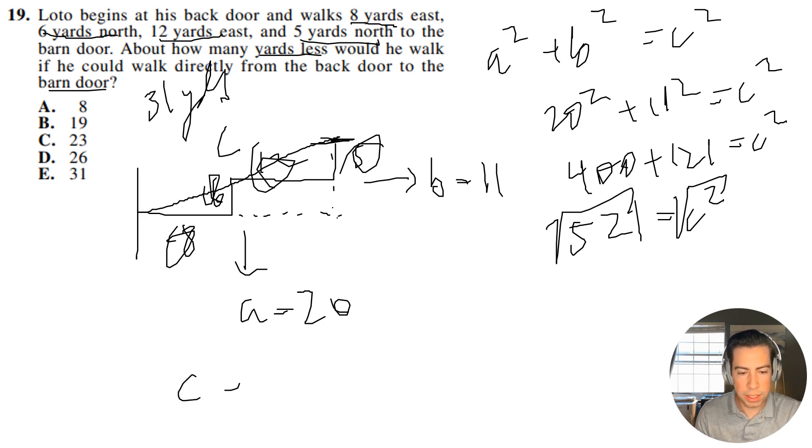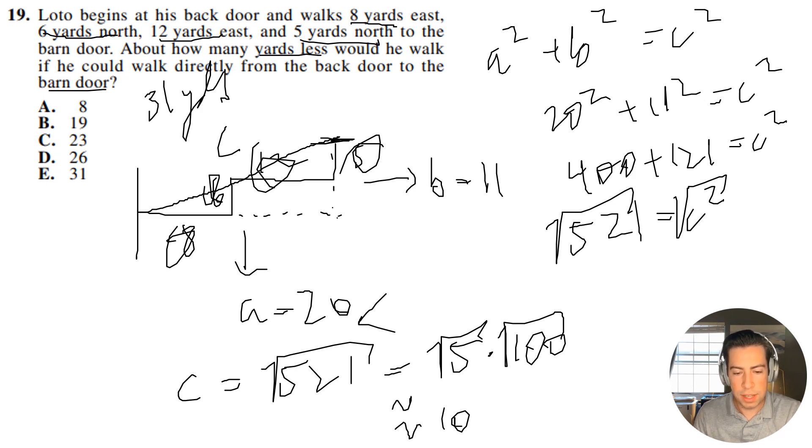All right guys, so you will get a calculator during the real exam, but let's just try and estimate here. So 521, that's more or less 5 times 100, right? So we can just rewrite this as 5 times 100. And we can just take the square root of both of these, because it's all in the square root. So this is just going to be approximately 10 times the square root of 5. And the square root of 5 has got to be greater than 2. So this is like approximately 21 or something like that.